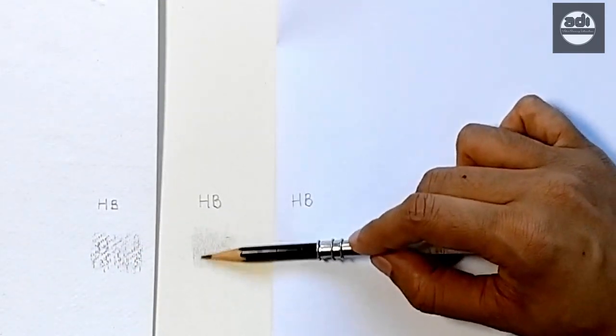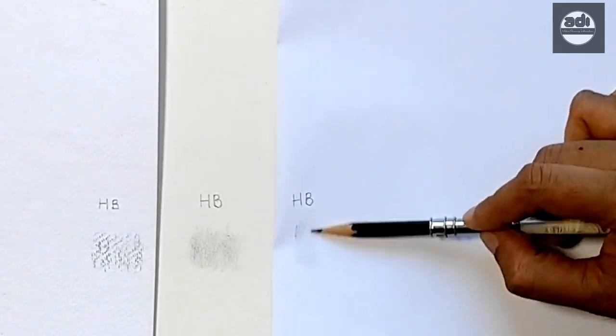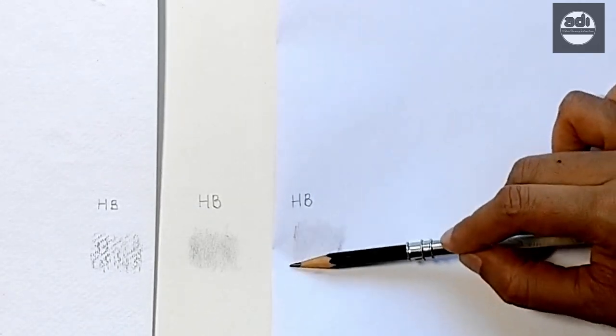Watercolor paper comes in cold press which is a rough surface, hot press which is a smooth surface, and rough which is an extremely rough surface.